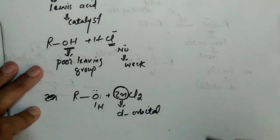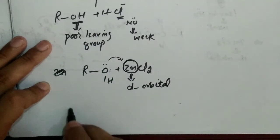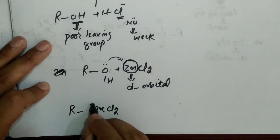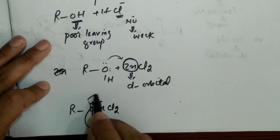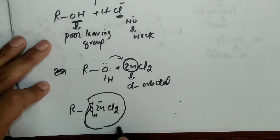And d orbital can accommodate the electron and it makes a complex R-OH ZnCl2 positive and negative. And now, this thing, this group as a whole is a strong leaving group.